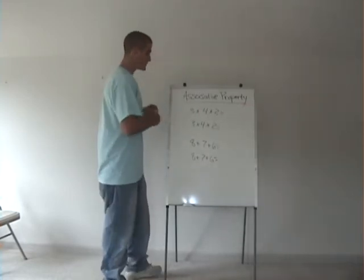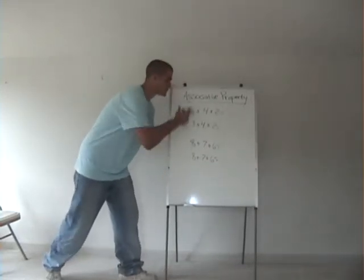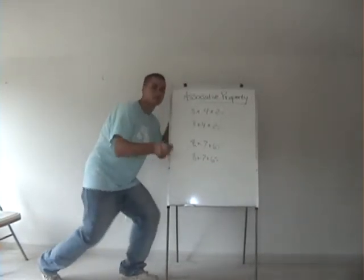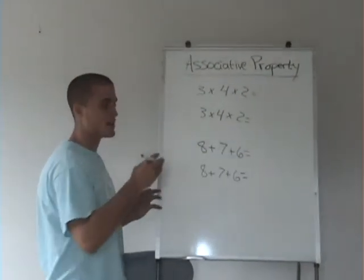What it says is that we can associate these numbers in this multiplication problem in any way by putting parentheses around two of them and starting by multiplying them, and it's going to keep the answer the same.